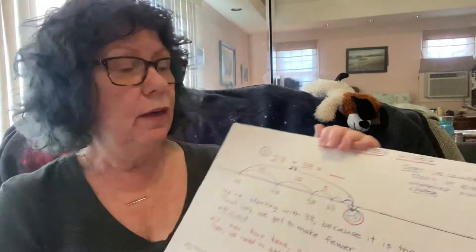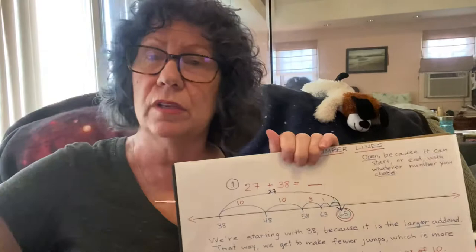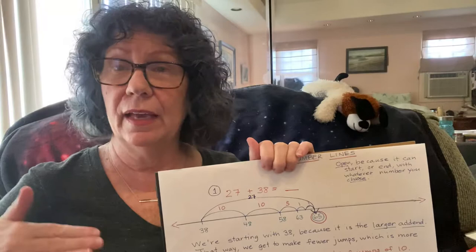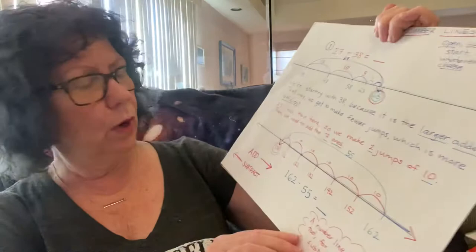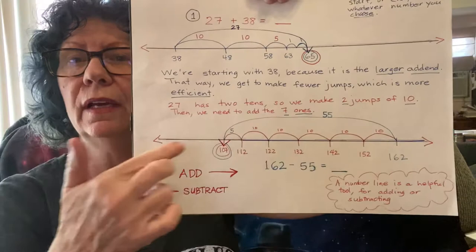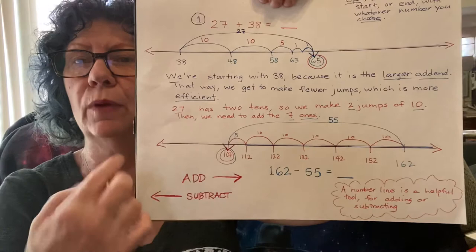We call it an open number line because a number line always goes like this horizontally, but it can start with any number, as long as the numbers are in counting order. And one thing we want to remember is that when we add on the number line, we're moving in this direction. Numbers get larger. When we subtract on a number line, we're moving in that direction and the numbers are getting smaller.